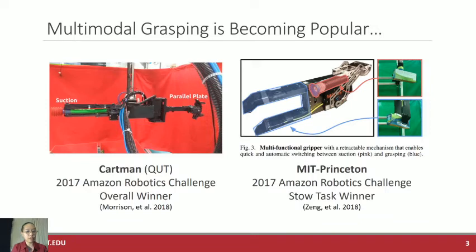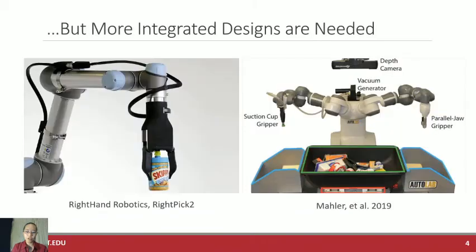Despite the popularity of multimodal grasping, we see an issue where it's not as fully integrated as it could be. We see this in some of these robots. For example, right hand robotics is using a combination rigid gripper as well as suction, but it primarily uses suction in order to pick up objects, shooting that out and only using the rigid components to steady the object within its grasp.